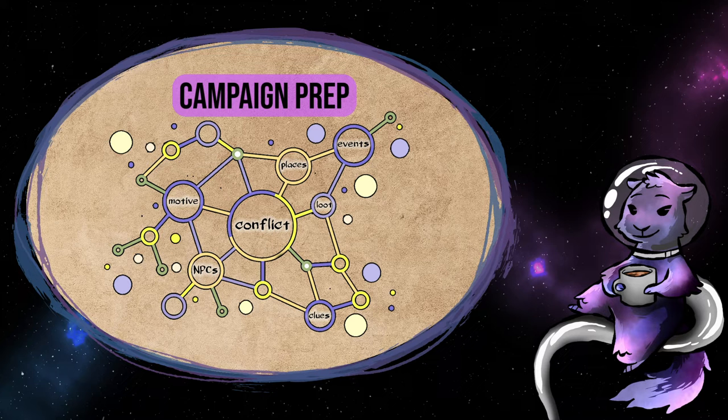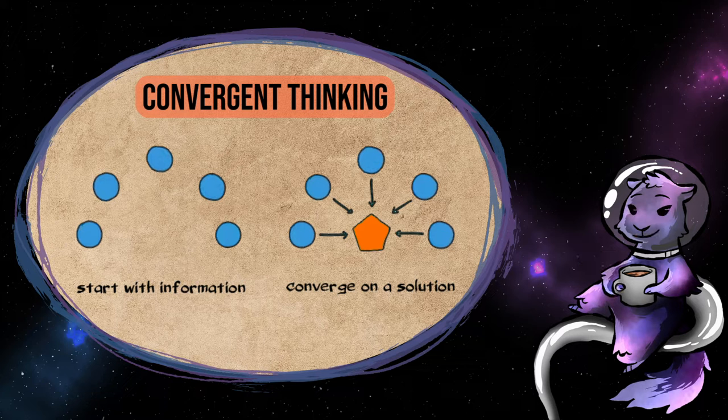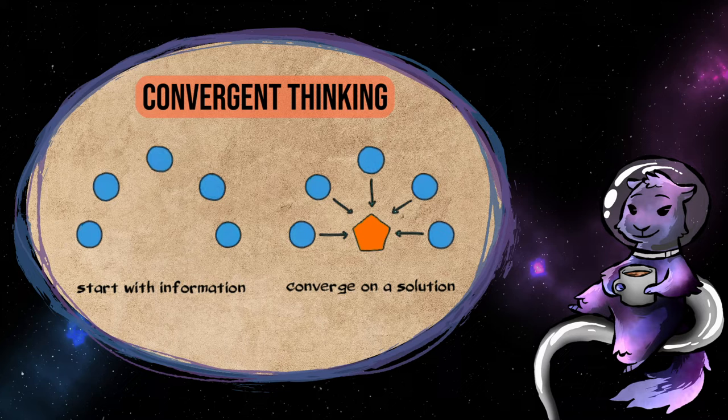While divergent thinking is obviously a part of this, campaign prep involves more convergent thinking. That is, starting from infinite possibility and converging on the best option. Crafting the villain's plan, seeding clues, determining the key milestones.